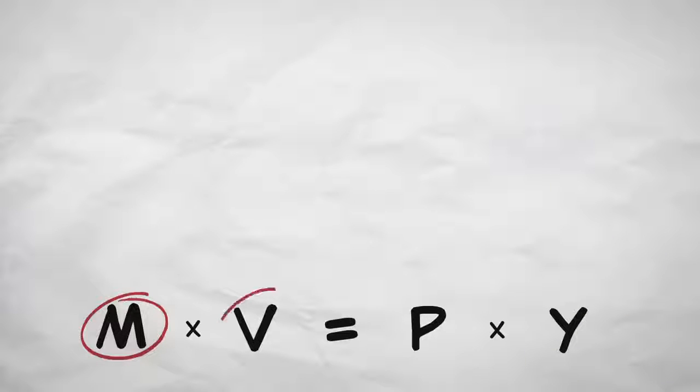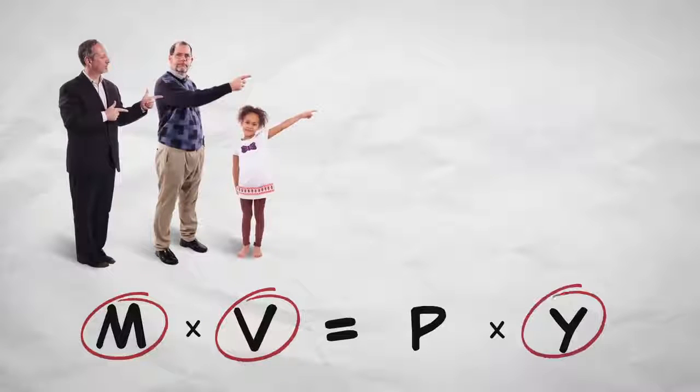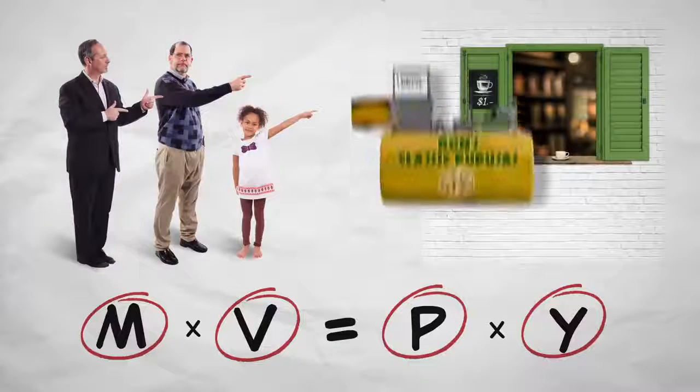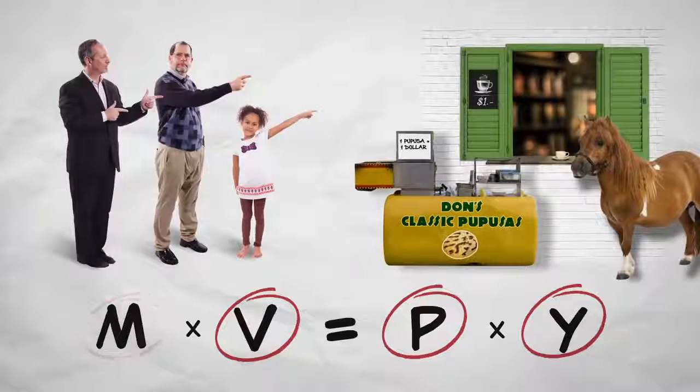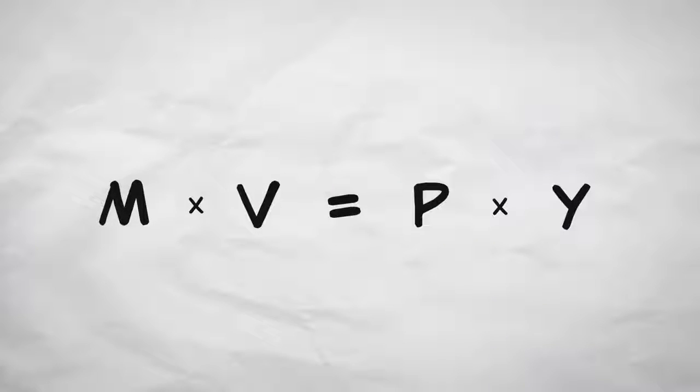One way to think about it is that how much money we have in total times how many times the money is spent covers the actions of buyers. The stuff we sell times the prices we charge covers the actions of sellers. Given that everything that is sold is, by definition, bought by someone, this equation is true by definition.